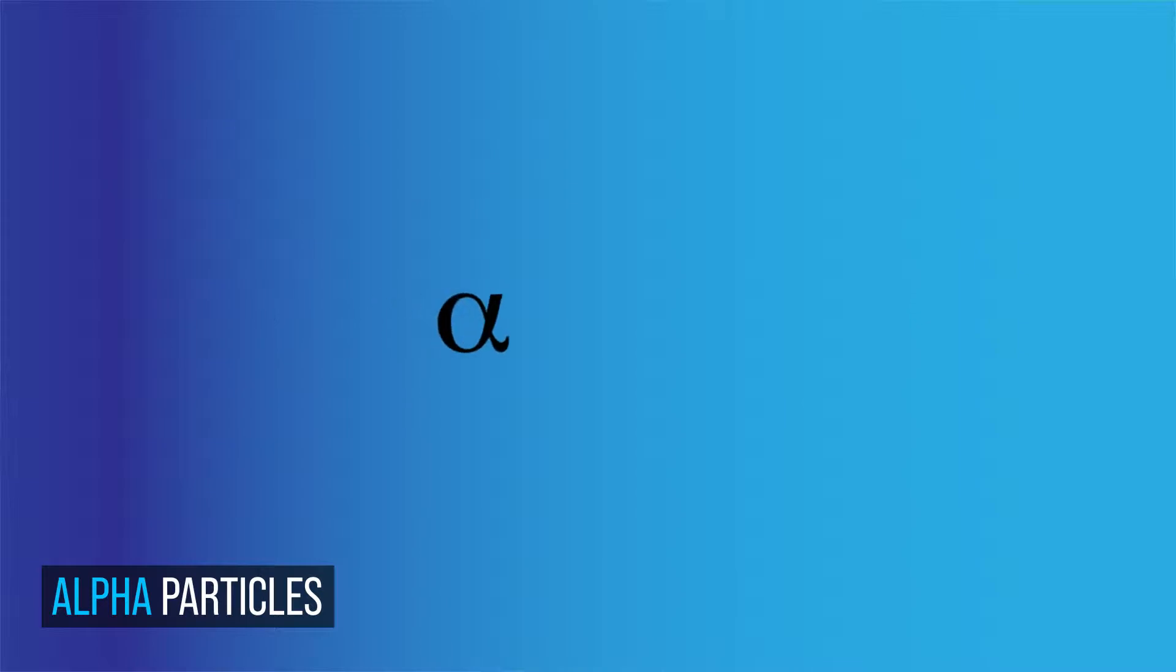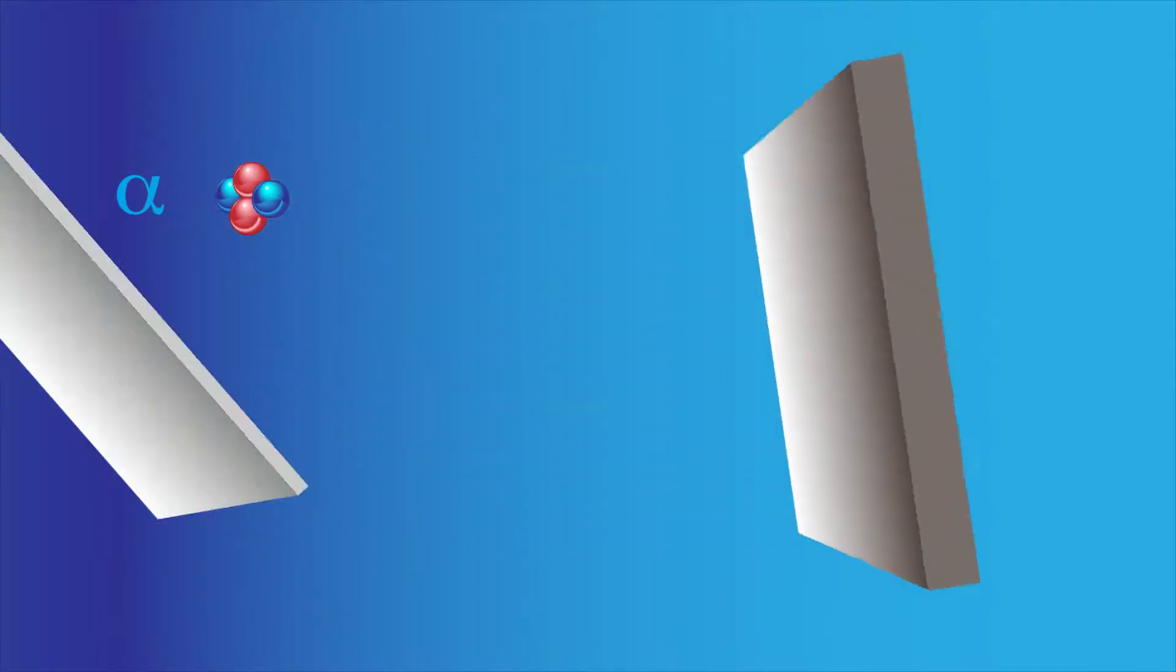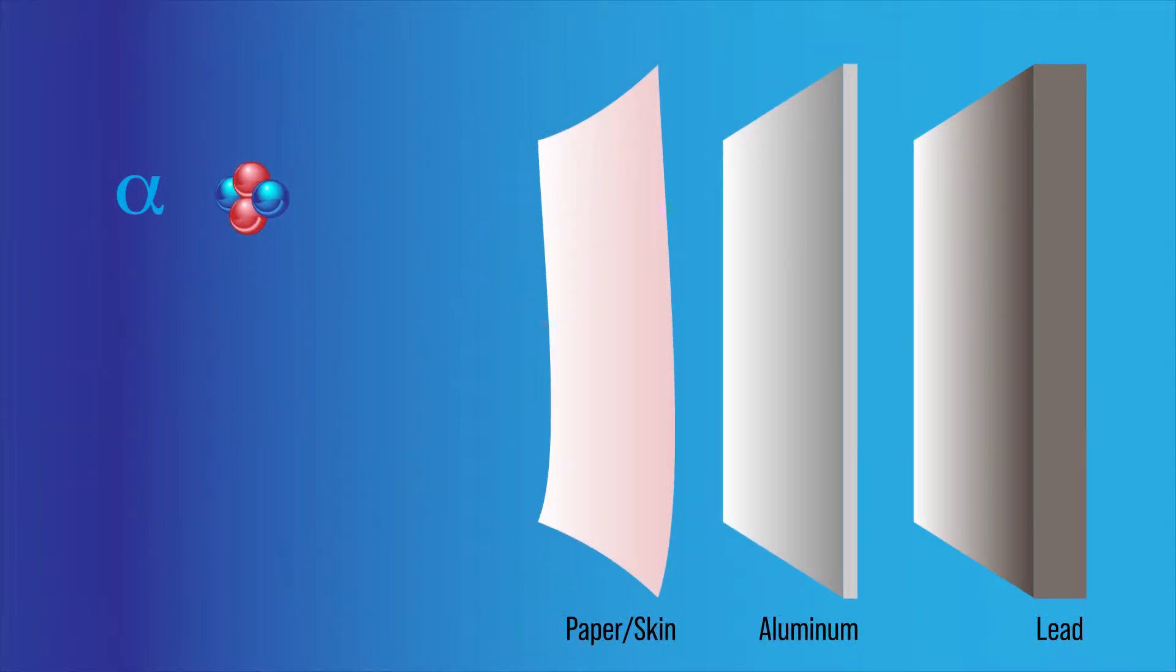Named alpha because they were the first to be discovered, the alpha particles consist of two protons and two neutrons, the nucleus of helium. Large atoms often disintegrate by emitting an energetic alpha particle. These particles are relatively large and positively charged and therefore do not penetrate the material very well. A thin sheet of paper can stop almost all the alpha particles.